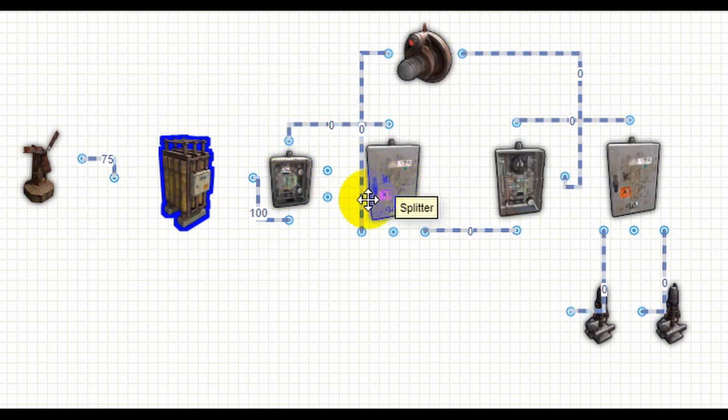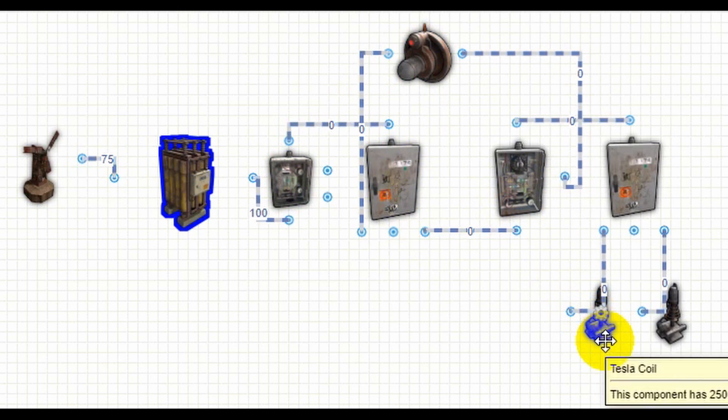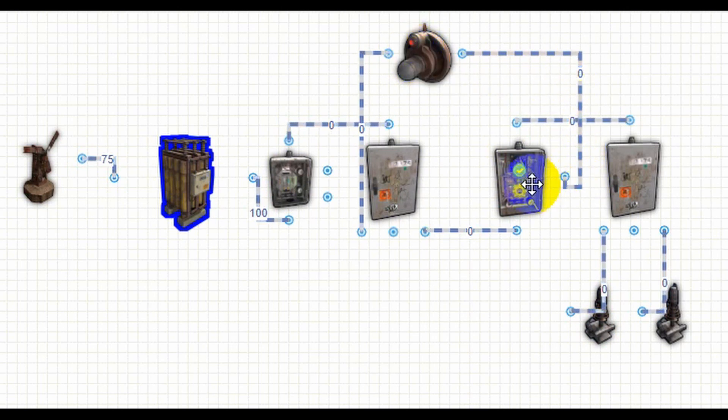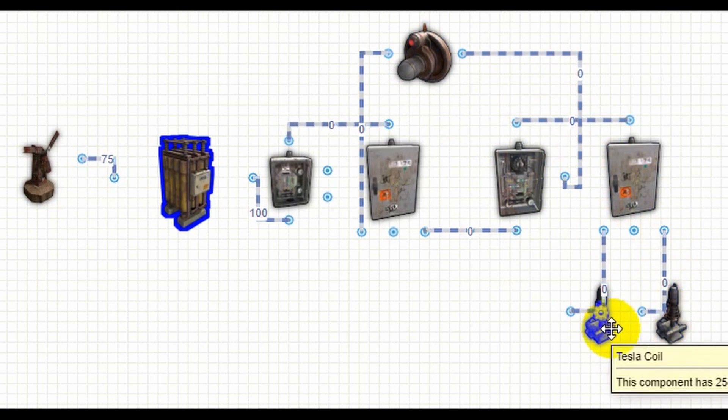The splitter goes one time to the sensor and one time to the timer. The timer is important because otherwise the Tesla coils will just be used until they die. From the sensor you go into the timer, into the toggle, and from the timer you go to the next splitter. From the splitter you can go to as many as three Tesla coils.